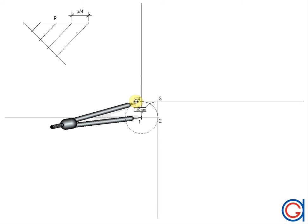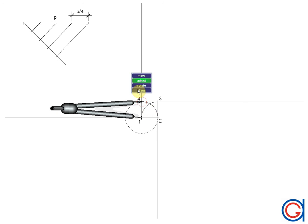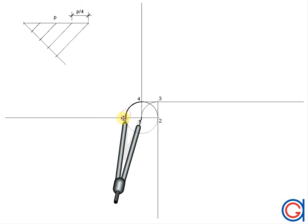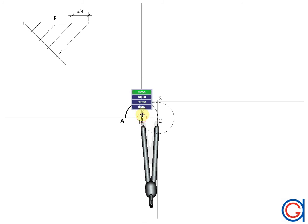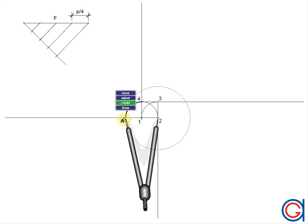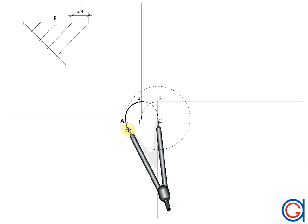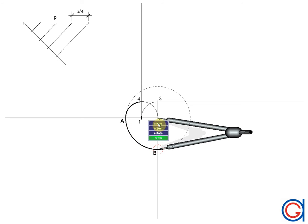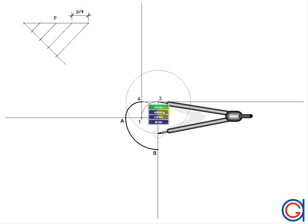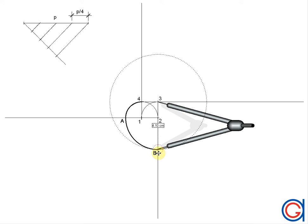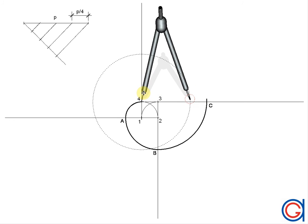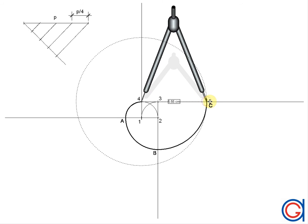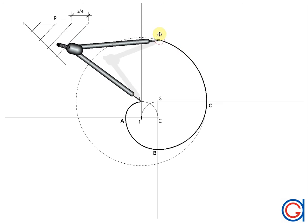Okay, so now finally we are ready to draw the spiral. With our compass centered on point 1 and length 1/4 p, we scribe an arc to the left until it cuts the adjacent prolongation at point A. Continuing, with our compass centered on point 2 and set to length 2A, we scribe an arc down until it cuts the prolongation at point B. With our compass centered on point 3 and length 3B, we scribe an arc until it cuts the prolongation at point C. Then with our compass centered on point 4 and set to length 4C, we scribe an arc until it cuts the prolongation at point D.